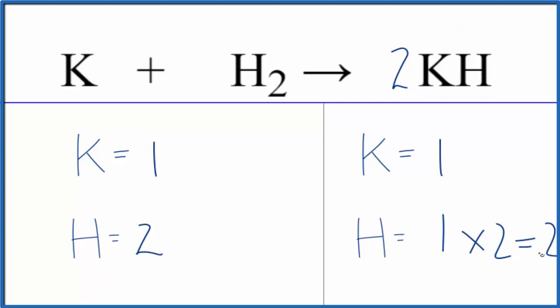So we have one times two for the hydrogen, one times two for the potassium. So now we have two potassium atoms.